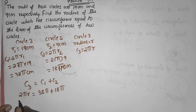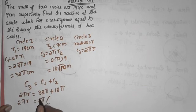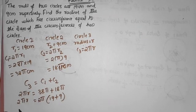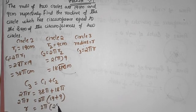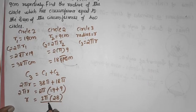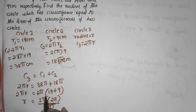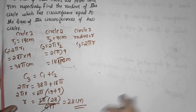I take 2 pi common. So 2 pi r equals 2 pi into 19 plus 9. So 2 pi r equals 2 pi into 28. Then 2 pi gets cancelled, and we have r equals 28 cm. This is the radius of the third circle.